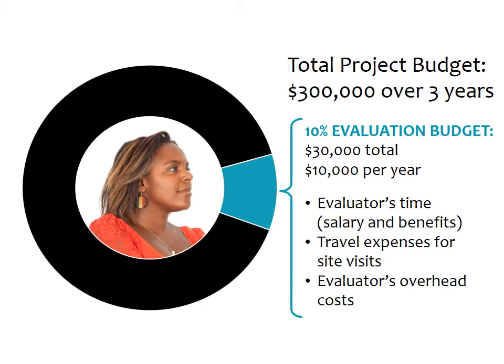Another major cost may be the evaluator's overhead rate, also called indirect, or facilities and administrative costs. There may be other miscellaneous expenses, but these are the main ones.